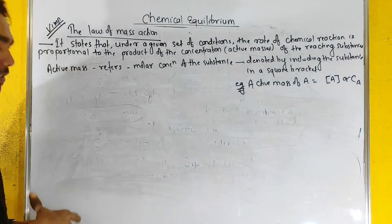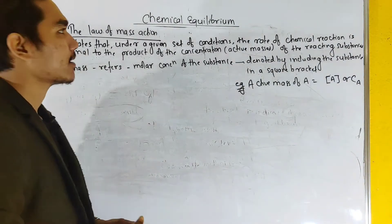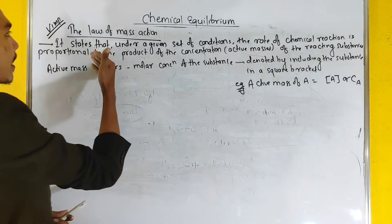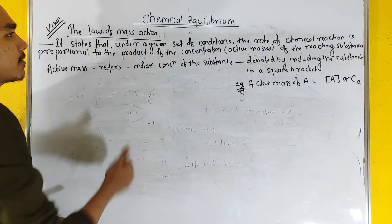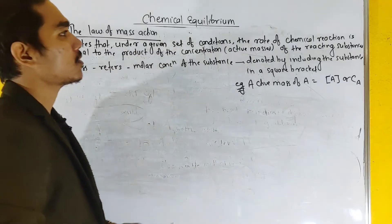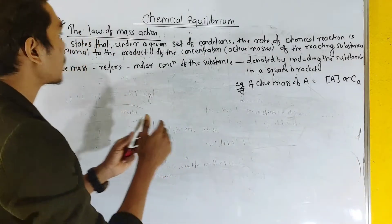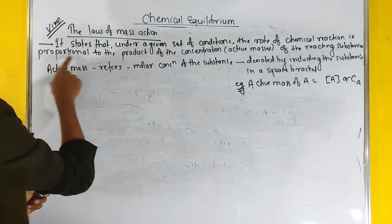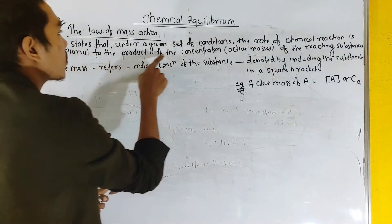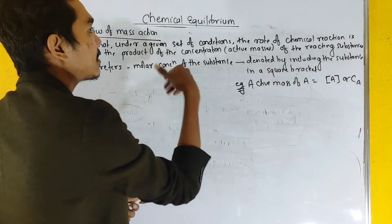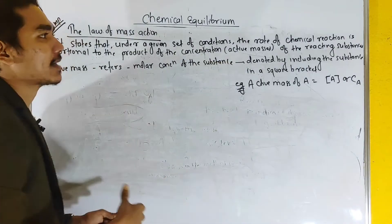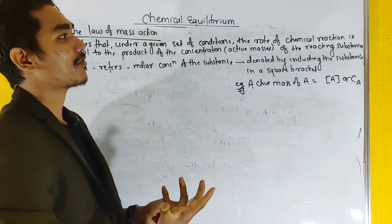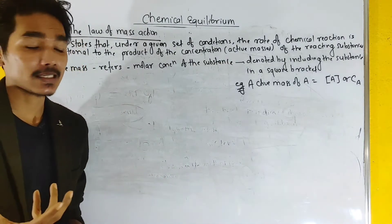This statement states that under a given set of conditions, the rate of a chemical reaction is proportional to the product of concentration, i.e., the active masses of the reacting substances.